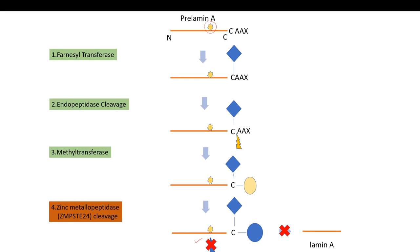So lamin A is not formed. But a precursor form of prelamin A which is methylated and farnesylated accumulates inside nucleus. Because the farnesyl group is not removed, this is the farnesyl group, because it is not removed, the prelamin A remains anchored to the inner nuclear membrane and this leads to distorted nucleus. So this is the genetic basis of Hutchinson-Gilford progeria syndrome.